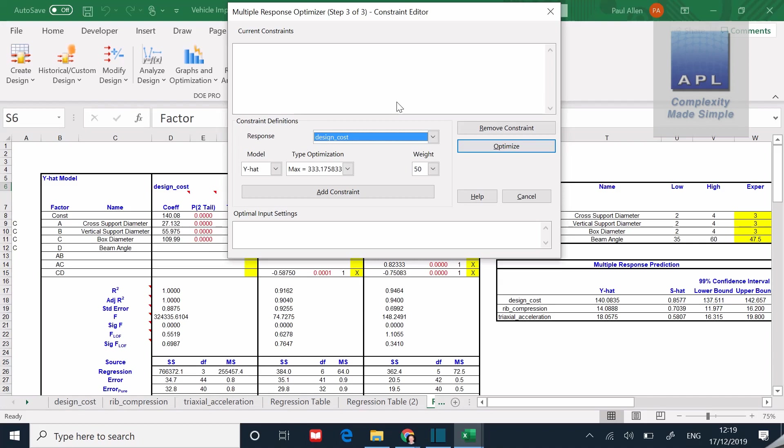Now, what I'm going to do is go to the optimizer function in my software. It's called a multiple response optimizer. If I click into this, I'm going to click through parts of it just to show you how the optimizer works. I'm going to click straight to the point where I ask it to hit the three targets. In this window, I get the opportunity to set constraints. For the design cost, it needs to be less than £300. So if I go less than, then I type in £300 and hit add constraint, it goes into the window. Then I drop the window down and I get rib compression and I put less than £11, add constraint. Then I drop triaxial and I put less than £15, add constraint.